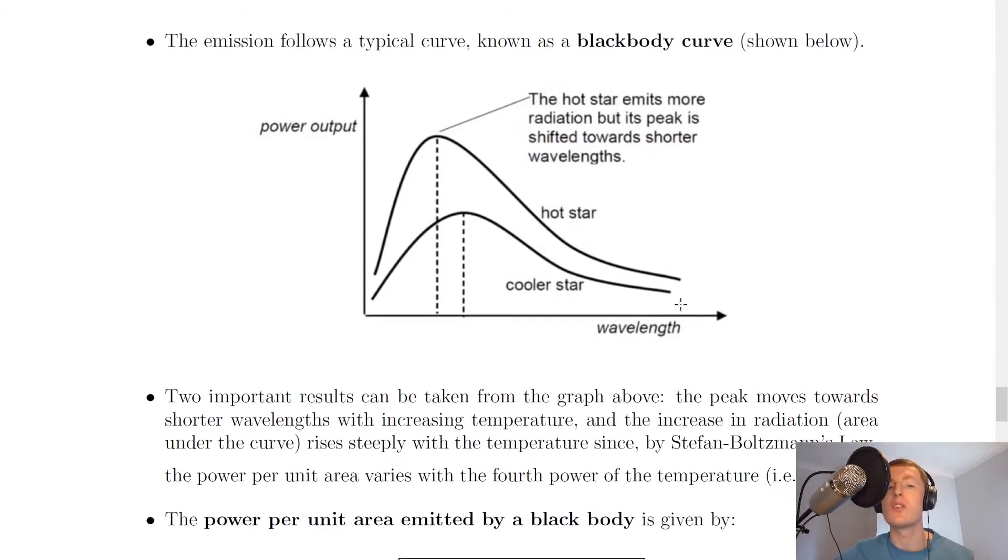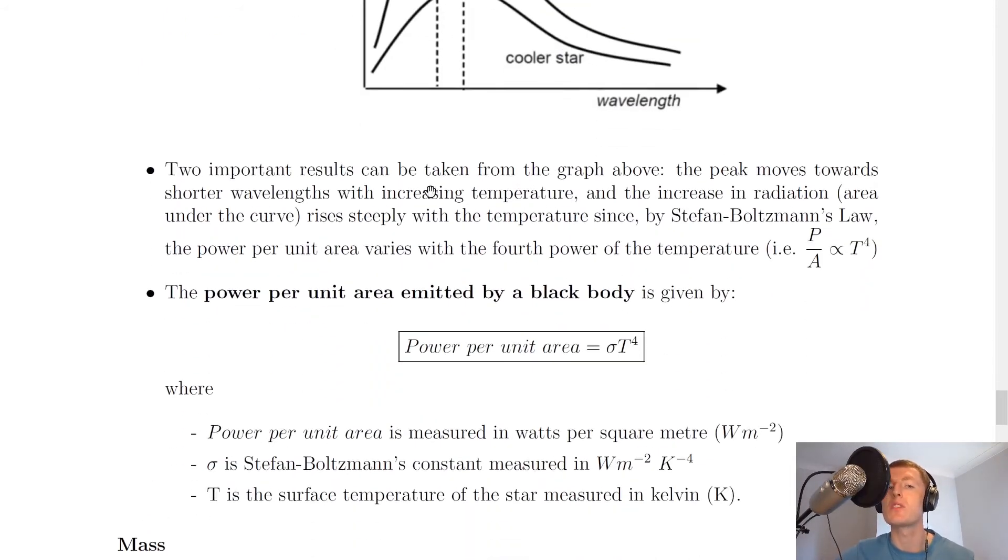From this we can conclude two things. Two important results can be taken from the graph above. The peak moves towards shorter wavelengths with increasing temperature and the increase in radiation, i.e. the area under the curve rises steeply with the temperature, since by Stefan-Boltzmann's law, the power per unit area varies with the fourth power of the temperature, i.e. p/a is directly proportional to T to the power of 4.